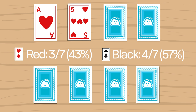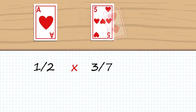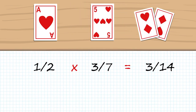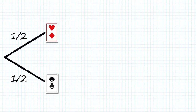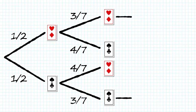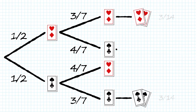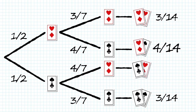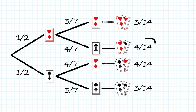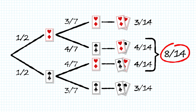To find the probability of both cards being red, we multiply them together. A tree diagram is able to show us all the possible outcomes. Drawing one of each colour can happen in two ways, so both of these results can be added together, and we can see that this is the most probable outcome.